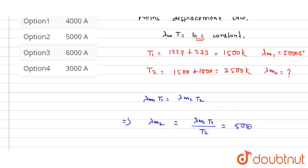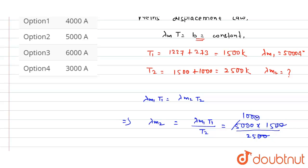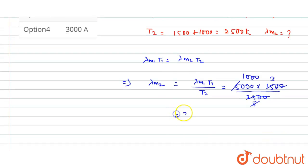Now we put in the values: lambda m1 is 5000 Angstroms, T1 is 1500 Kelvin, and T2 is 2500 Kelvin. This simplifies — 1500 over 2500 reduces to 3 over 5 — so lambda m2 equals 3000 Angstroms.